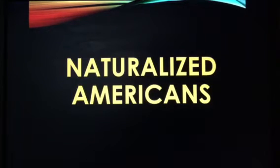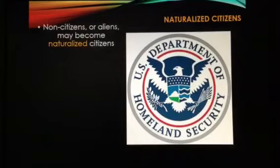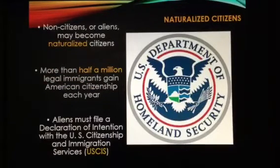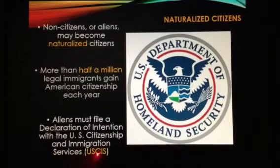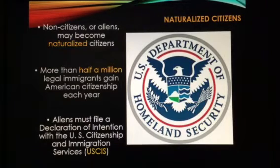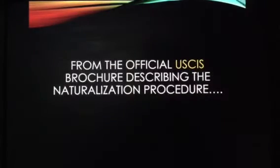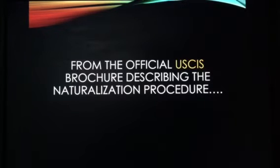The other way a person can become a U.S. citizen is through a legal process called naturalization. More than half a million legal immigrants gain citizenship each year. It is done through the USCIS — the United States Citizenship and Immigration Services — which is part of the Department of Homeland Security. We have 15 executive departments of the federal government, and homeland security is one of them. We're going to look at the steps a legal alien must go through to become a naturalized American citizen.